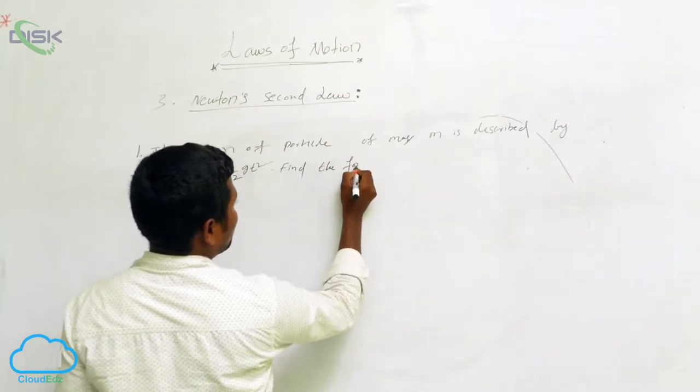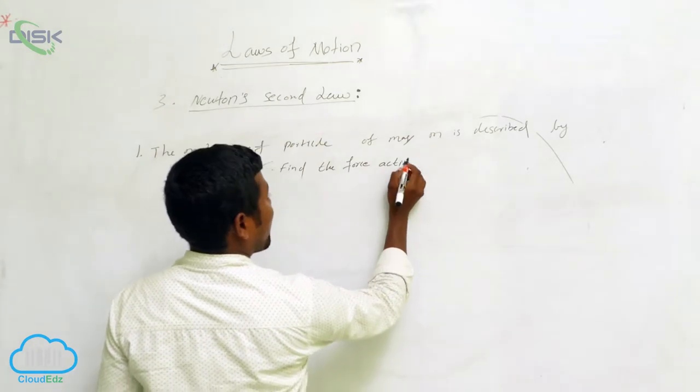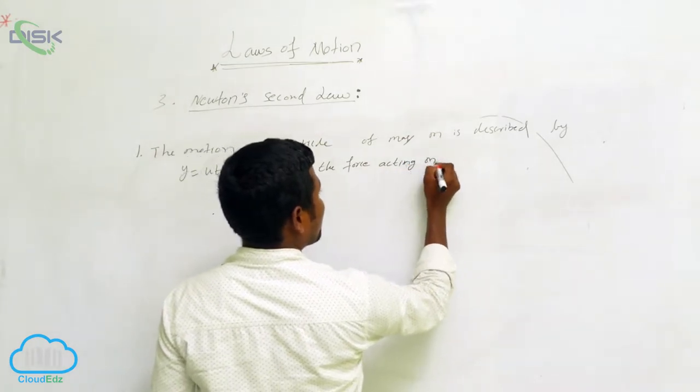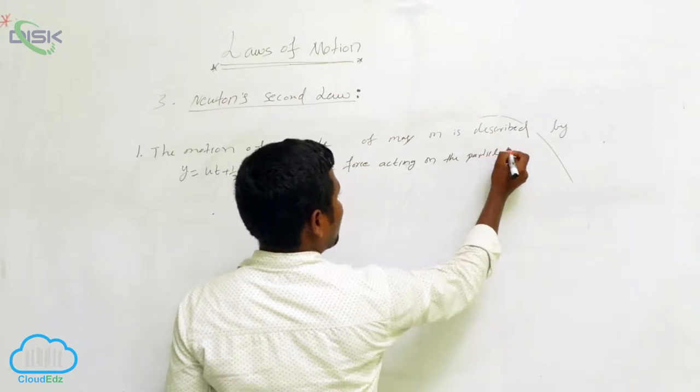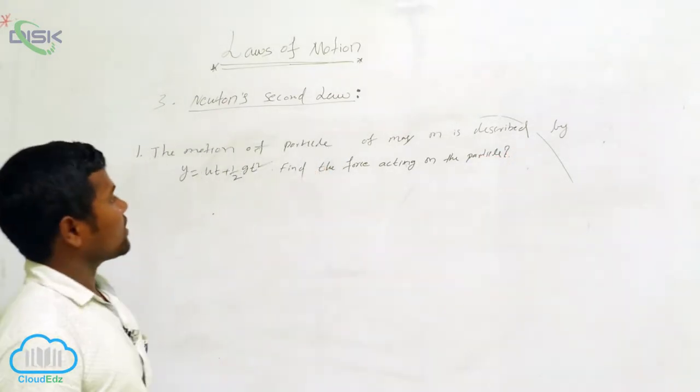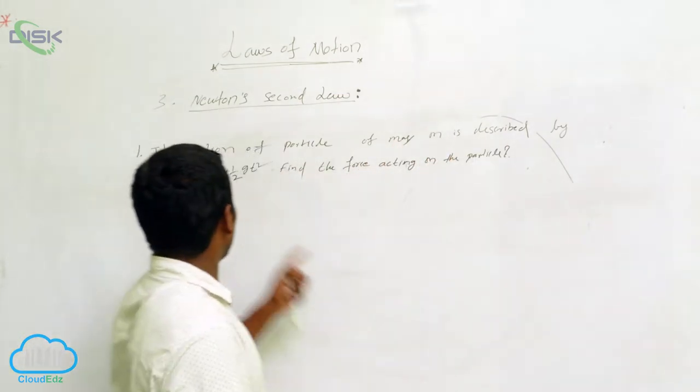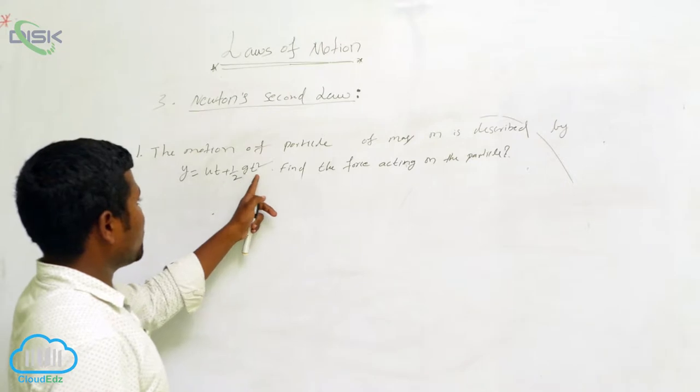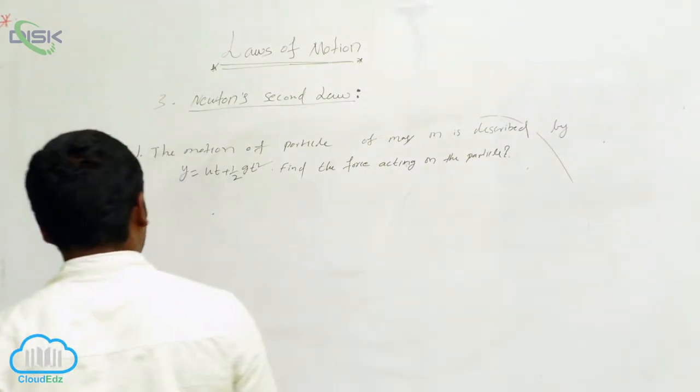Find the force acting on the particle. Okay, what is asking? See, the motion of a particle of mass m is described by y equals ut plus gt squared. Find the force acting on the particle.